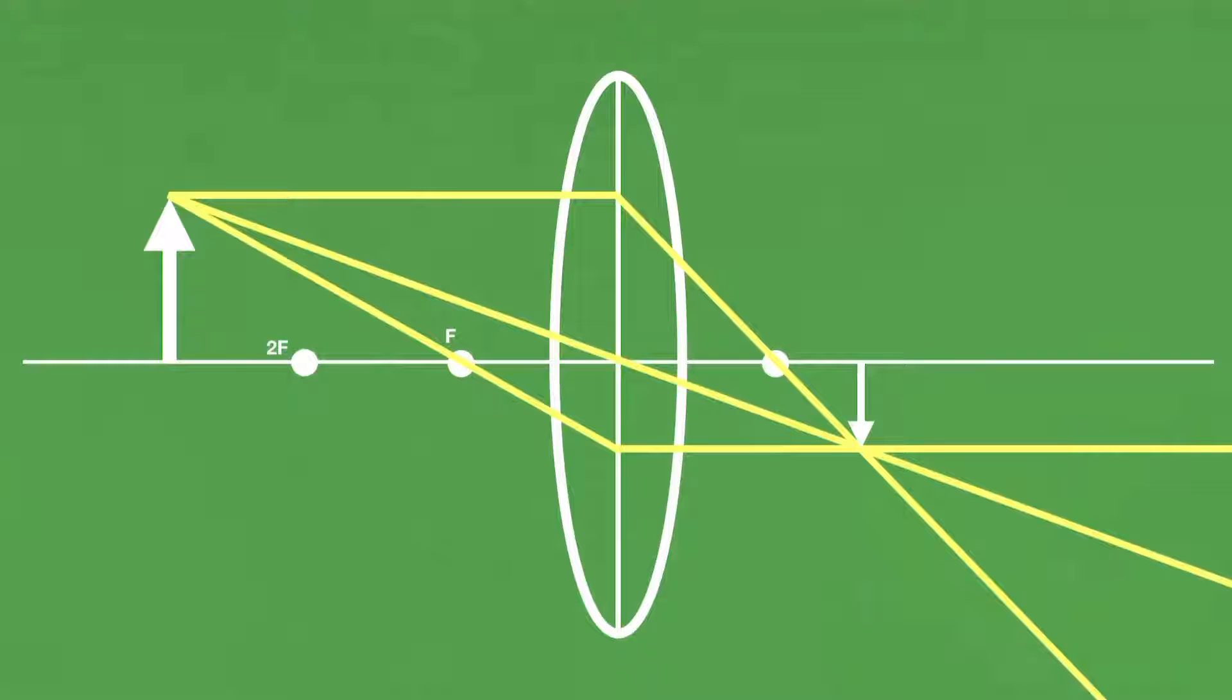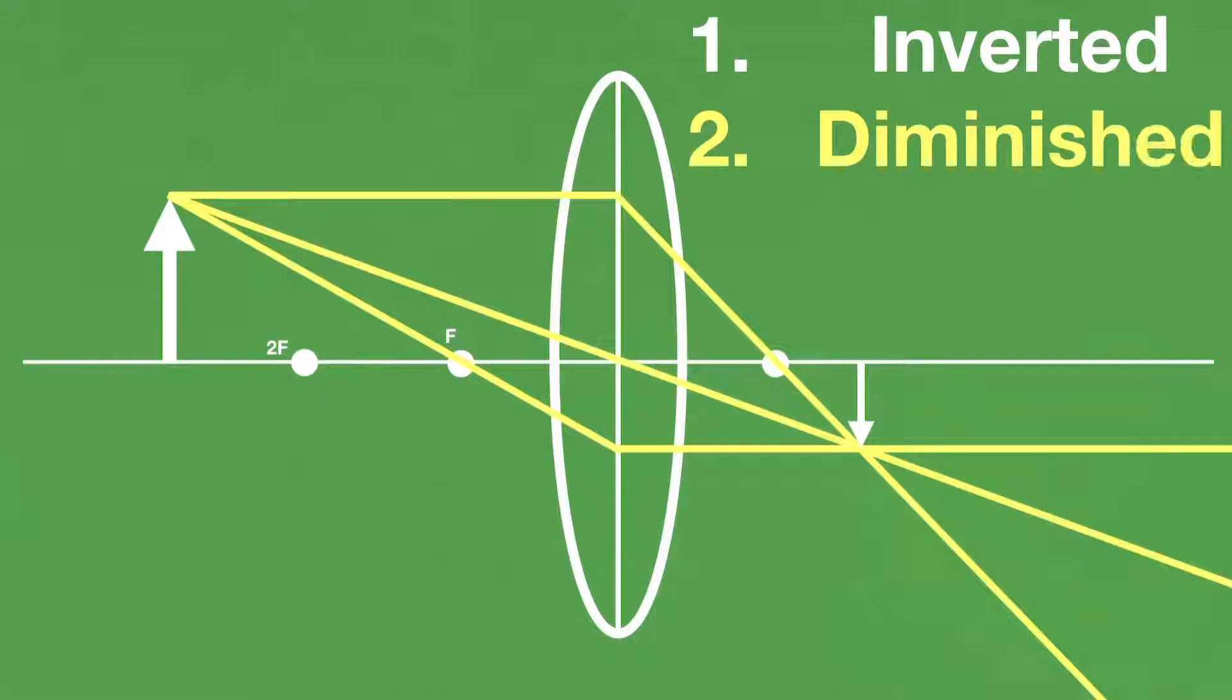Basically, an object beyond 2f produces an image that is inverted, that is diminished, and that is real.